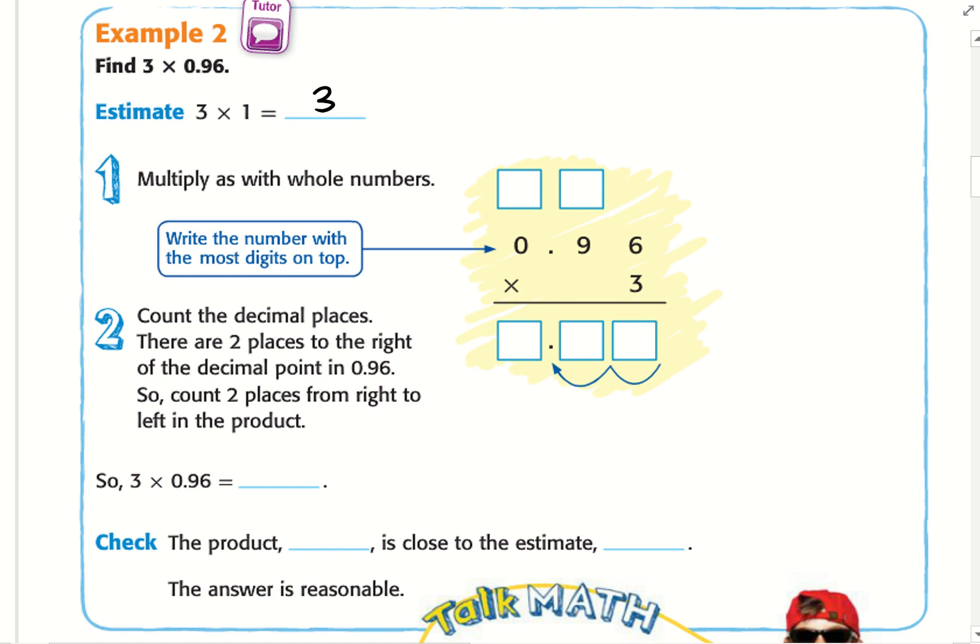Multiply as we do with whole numbers. 3 times 6 is 18. 3 times 9 equals 27, plus 1 equals 28. 3 times 0 equals 0, plus 2. So we have 2.88.